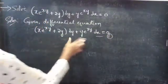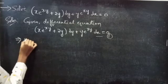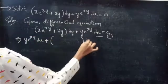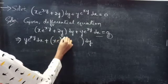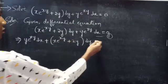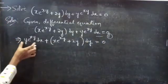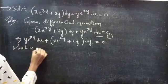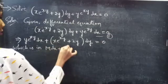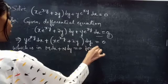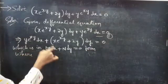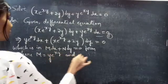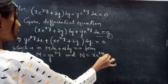We can rewrite this equation by grouping: the term containing dx, that is y into e power xy into dx, plus the term containing dy, x into e power xy plus 2y into dy, equals to 0. This is in M dx plus N dy equals to 0 form. By comparing, we get M equals to y into e power xy, and N equals to x into e power xy plus 2y.